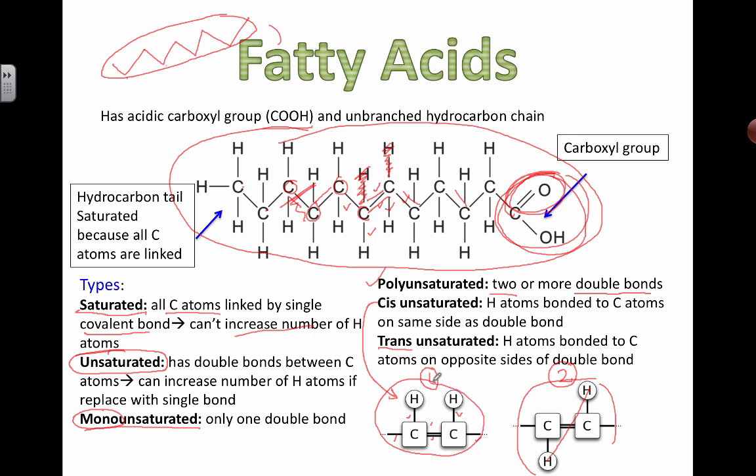And then you can add different types of names to these things based on how many double bonds there are. If there's only one, if there's more than one, we call it a polyunsaturated fatty acid. And then based on the type of double bond and the location of these actual hydrogen atoms, if they're on the same side or different side, we can call them cis or trans unsaturated bonds, basically.